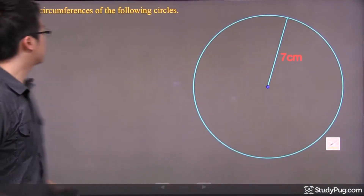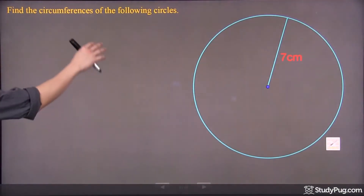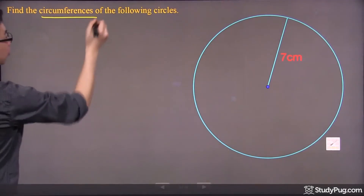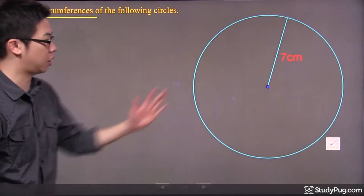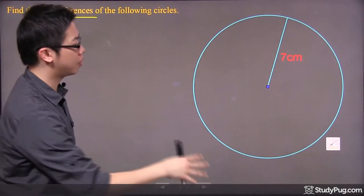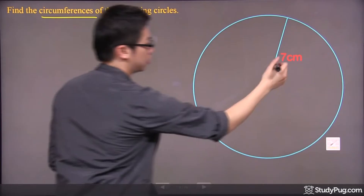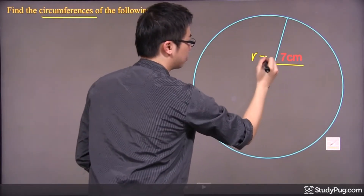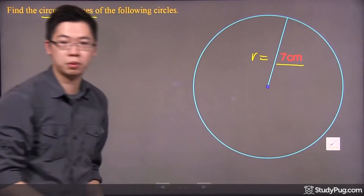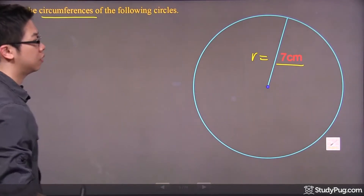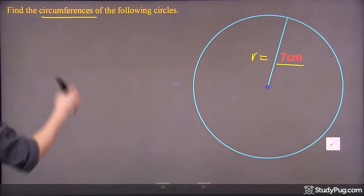Hi, welcome to this question right here. We're told to find the circumference of the following circles, and here's your circle. From the circle, you'll notice this — that is your radius, because it's from the center to the side of the circumference.